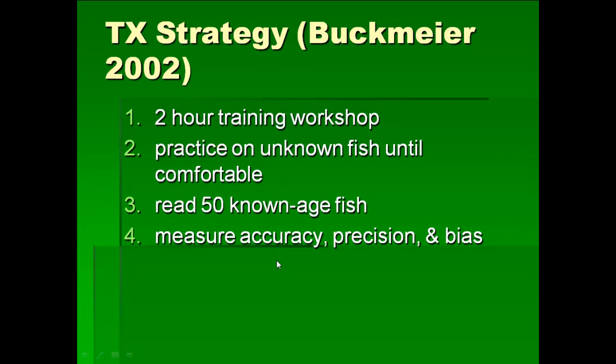Texas came up with a very strict protocol that they've had a lot of success with. It begins with a two-hour training workshop learning the aging technique. Then the person practices on unknown fish until they feel comfortable. They then have 50 known-age fish — a collection of largemouth bass otoliths accumulated from known-age fish over years — and accuracy, precision, and bias are measured. An individual has to reach a certain level of accuracy and precision before they're allowed to actually age fish in the lab.